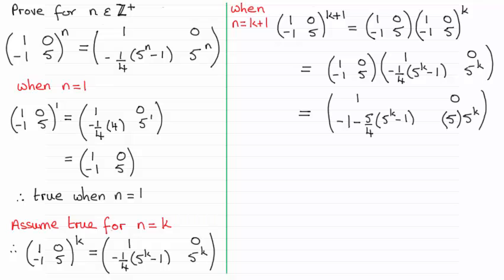The result you should get is what I've done here. For the bottom-left element: it's (-1) times 1, which is -1, plus 5 times this element here. So 5 times (-1/4) gives us -5/4, and then it's all multiplied by 5 to the power k minus 1. As for the bottom-right element, it'd be (-1) times 0 which is 0, plus 5 times 5 to the power k.